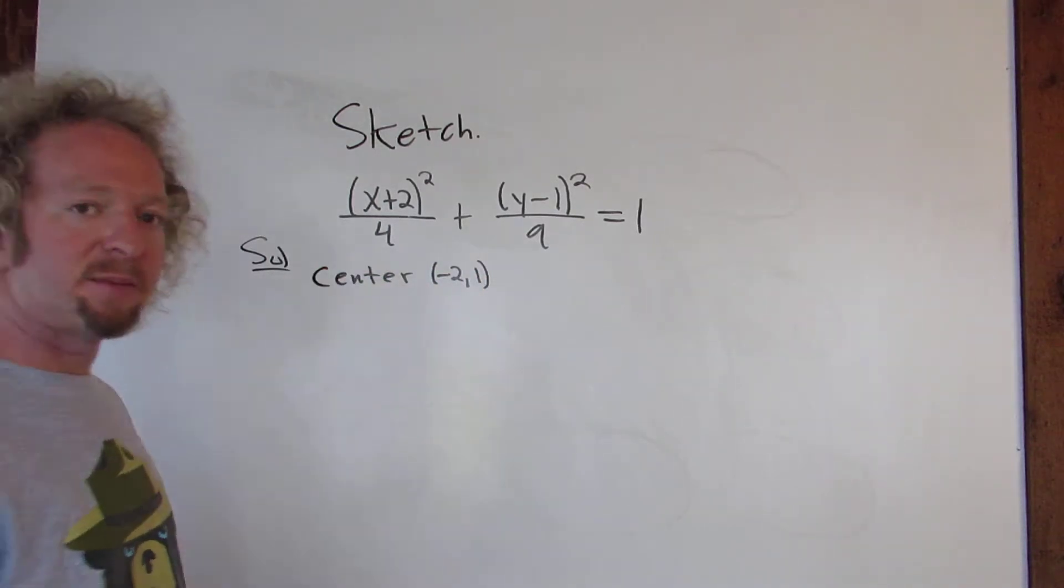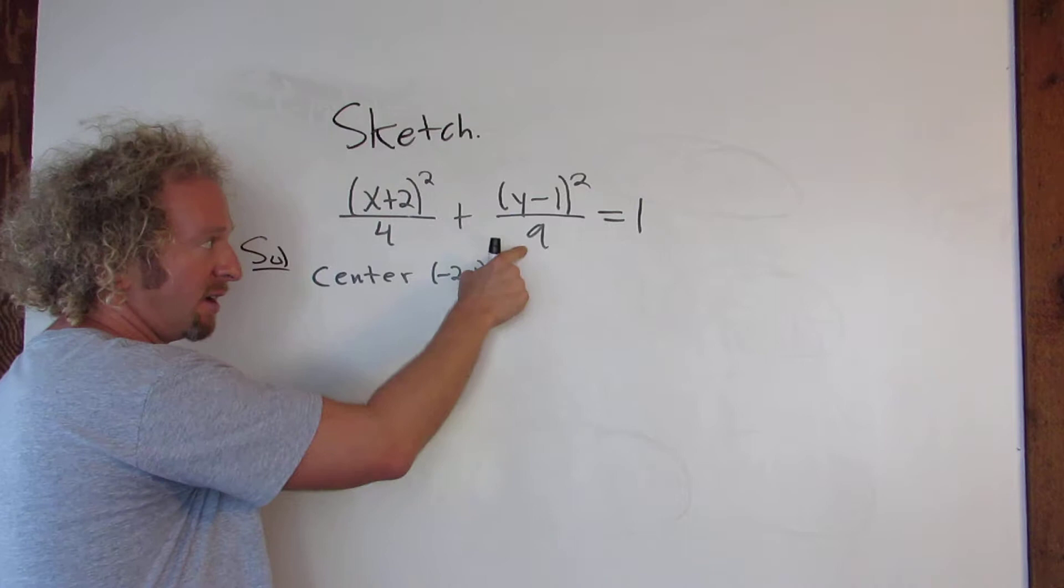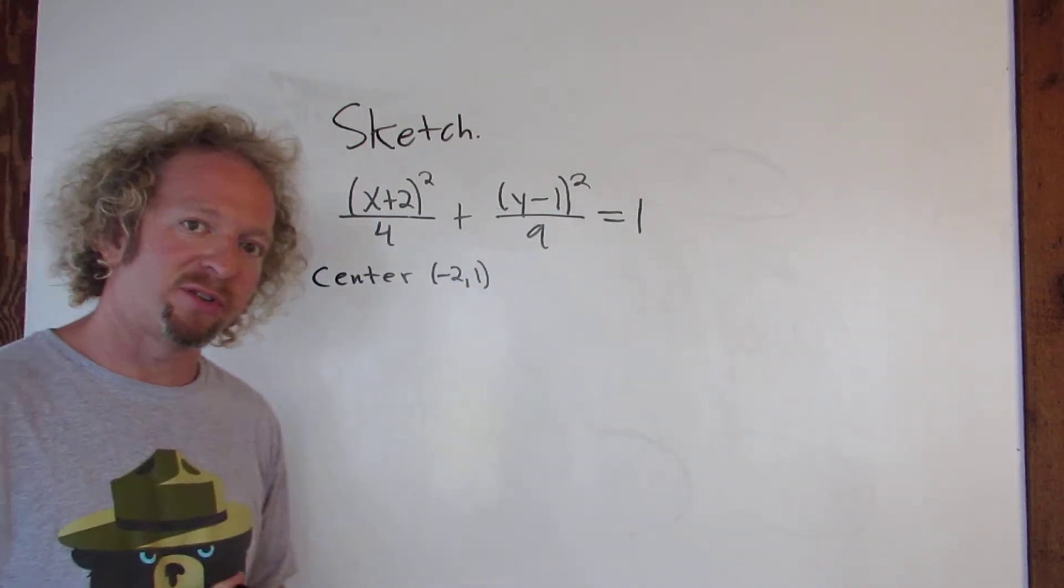By the way, you know this is an ellipse because these numbers are different and there's a plus sign. If these numbers are the same with a plus sign, this would be the equation of a circle.